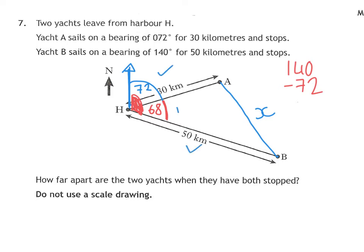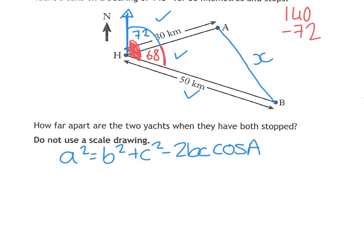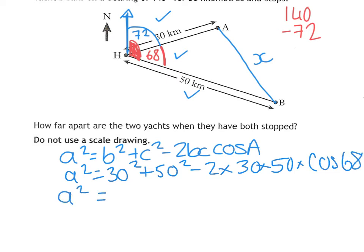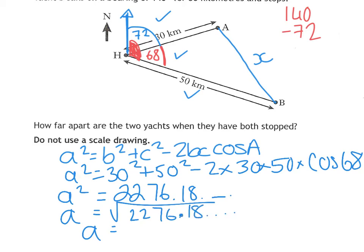I now know two sides and the angle in between, so that is a good old cosine rule. A squared equals B squared plus C squared minus 2BC cos A. We've got 30 squared plus 50 squared minus 2 times 30 times 50 times cos 68. You get 2276.18. Remember, that's not the final answer because you've still got to square root that number. That gives you 47.71 kilometres to two decimal places.